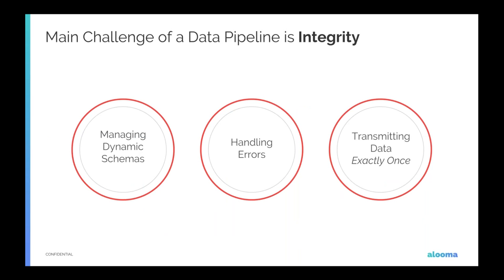There's a significant challenge when bringing in data in real time: maintaining integrity. First, your schemas are going to change — it's inevitable. You need to manage dynamic schemas without manually mapping them yourself. Second, errors are certain — you need to keep good data flowing while gracefully rectifying errors. Third, when you have a real-time pipeline, you need to make sure data is transmitted exactly once so you don't end up with duplicates.